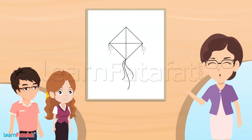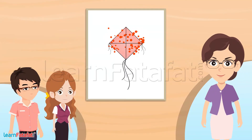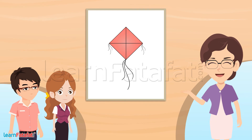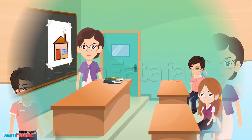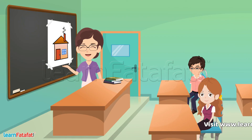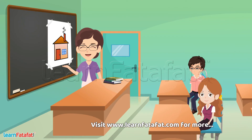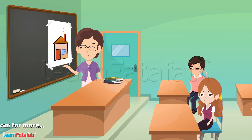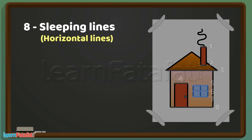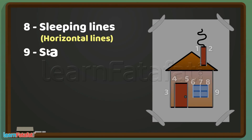Now let's color it. See, we have drawn a kite! So students, now look at this picture. Can you tell me how many sleeping lines, standing lines, slanting lines, and curved lines are there in this picture? Ma'am, there are eight sleeping lines, nine standing lines...